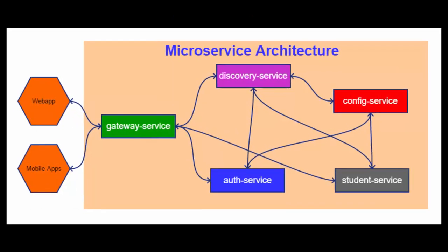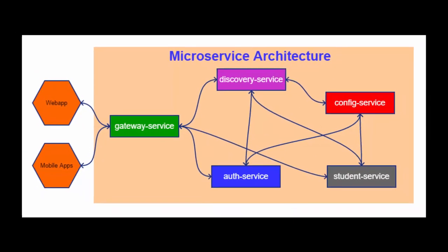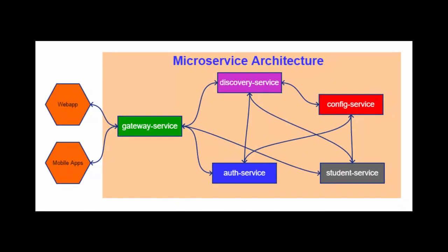As microservices communicate through REST, the transformation scope is very small — only one service is dependent on another service via API call.